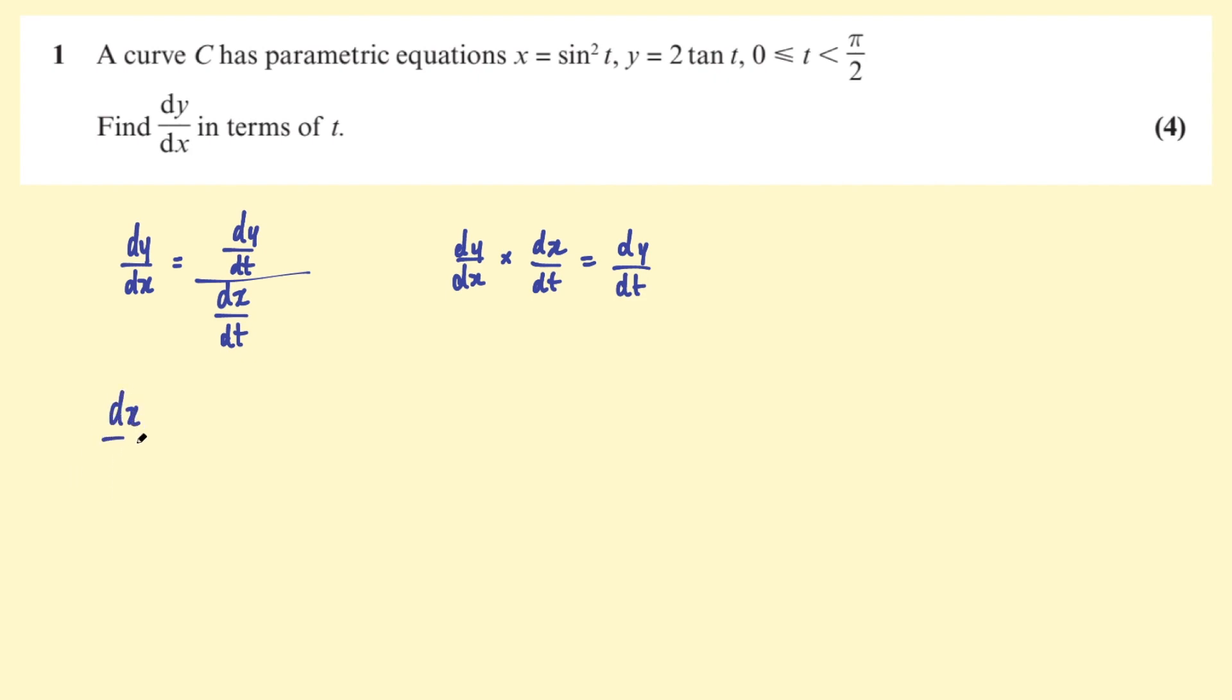So let's start with dx/dt. This is the derivative of sine squared t. Now, sine squared t you can think of as sine t times sine t. And if you really can't remember the chain rule, just use the product rule, you get the same thing. But we can use the chain rule here, it's going to be faster.